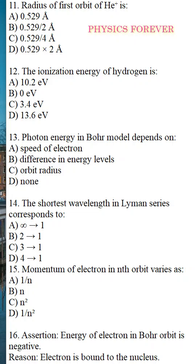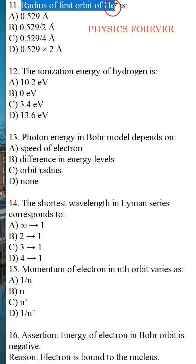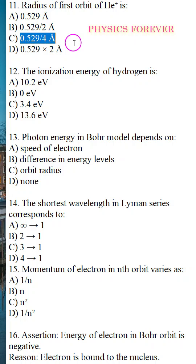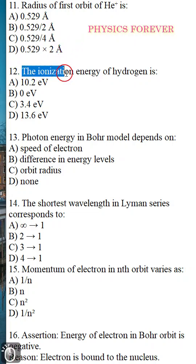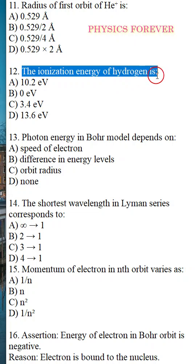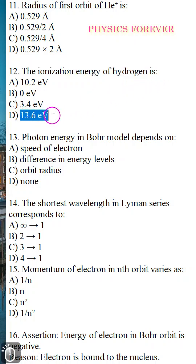I am going to ask a question from the last class. Question number 11: Radius of first orbit of helium plus. The correct answer is option C. We have to discuss elaborately how to get this value. Question number 12: Ionization energy of hydrogen — the correct option is D, which is 13.6 electron volt.